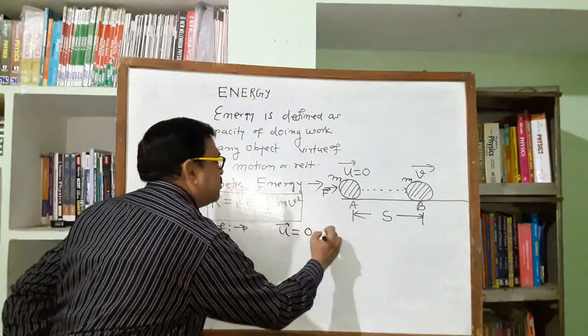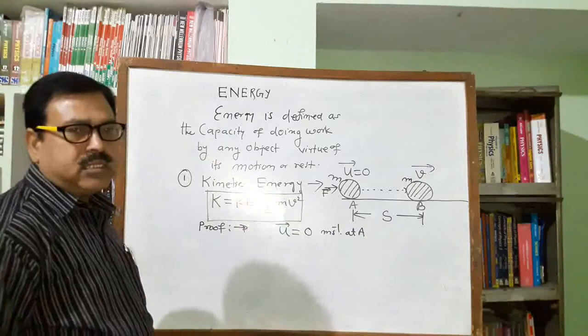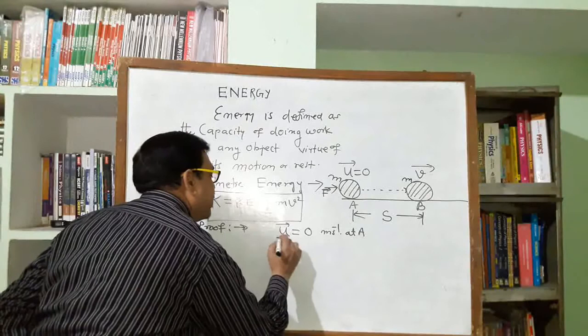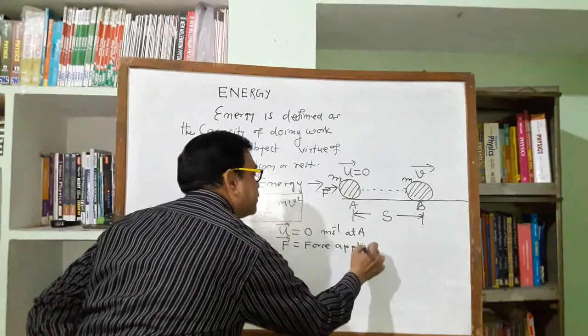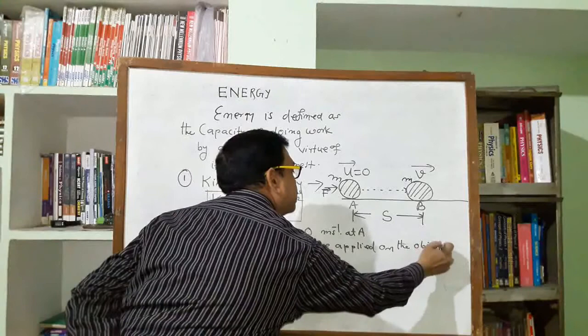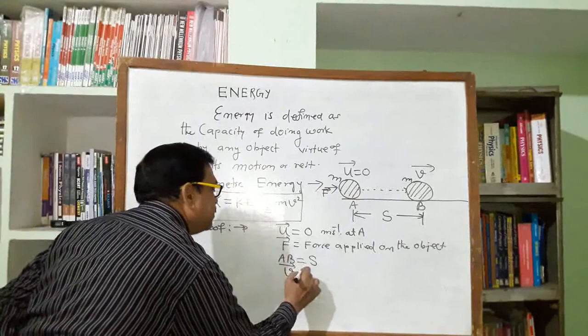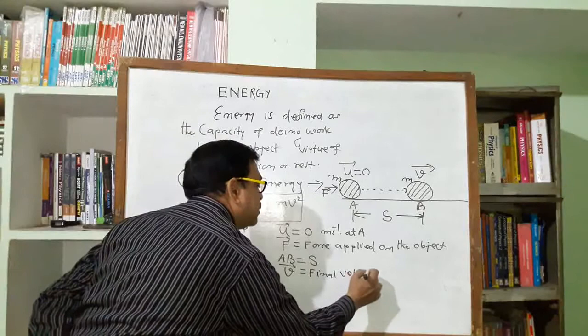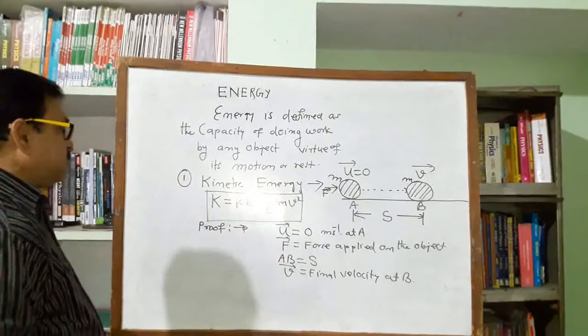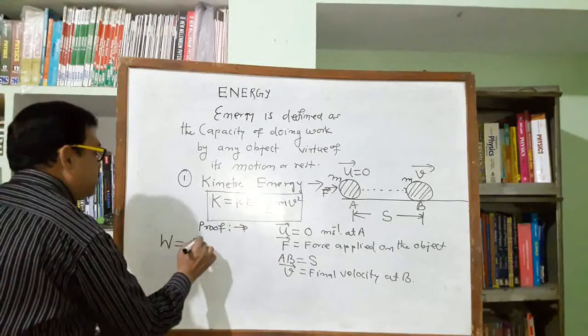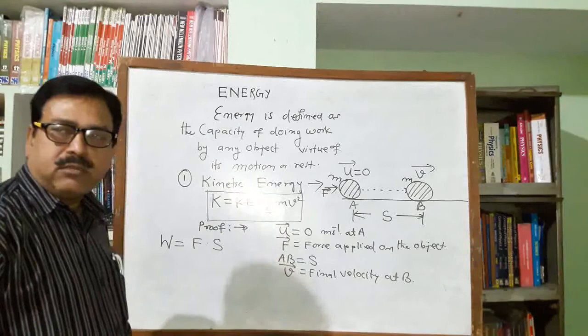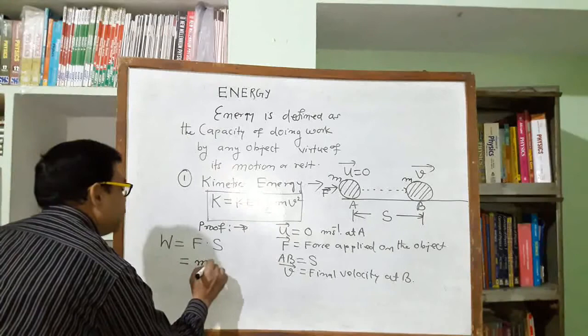The initial velocity u is zero meters per second. When force is applied on the object, it displaces from A to B such that displacement is equal to S and acquires final velocity v at B. The amount of work done is force into displacement, and we will make use of mass into acceleration in place of force.